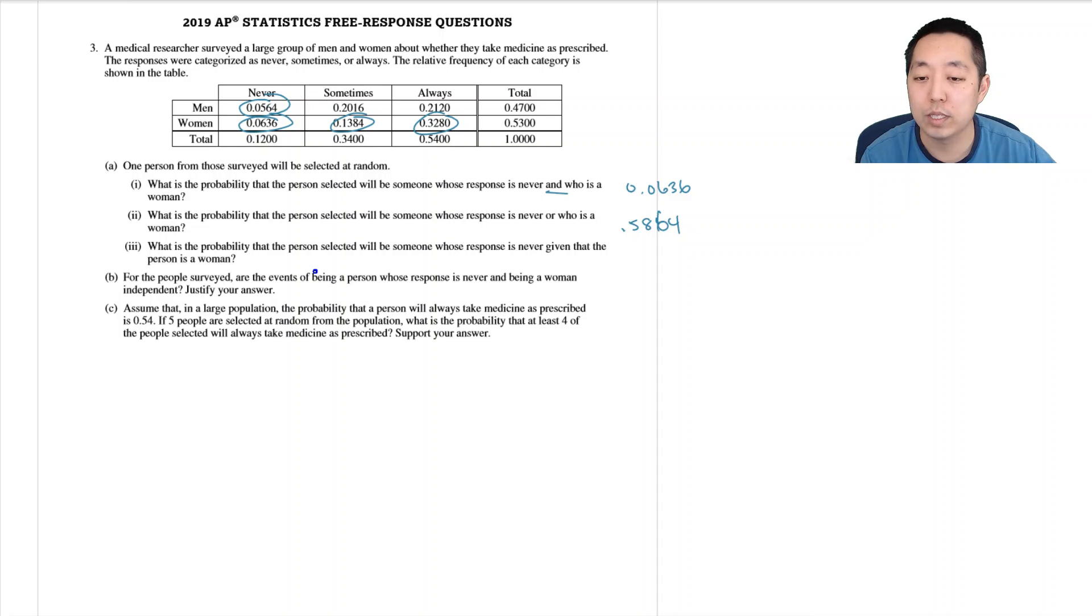What is the probability the person selected will be someone whose response is never given that the person is a woman? Now we're going to look at only the women area and we want to know the probability that they would say never given that they're a woman. This is conditional probability: the probability of B given A is the probability of A and B divided by the probability of A. In this case it's the probability that they're both women and never, 0.0636, divided by the probability that they are a woman, which is 0.53.